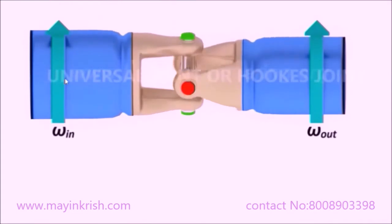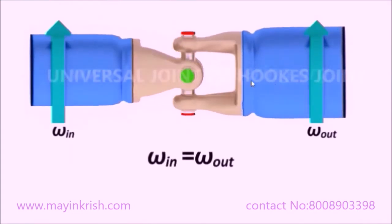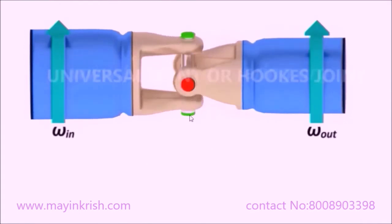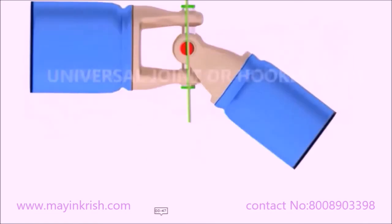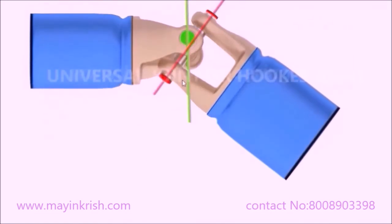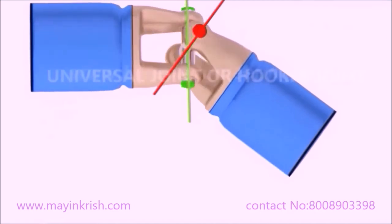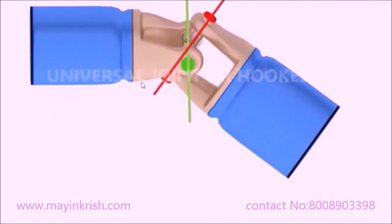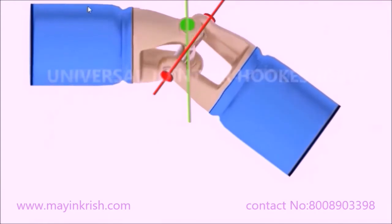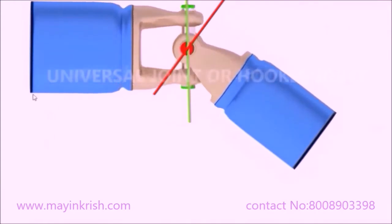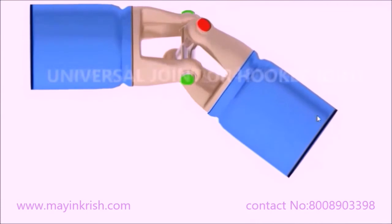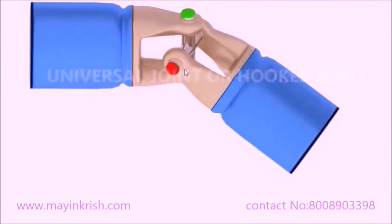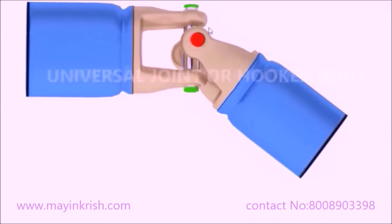When the two shafts are in a collinear manner, the green end and the red end links are in the same plane. But when viewed in an inclined manner, the green end and the red end links are in different planes. So whatever angular velocity is given to the input shaft will differ at the output shaft because the two links are in different planes.